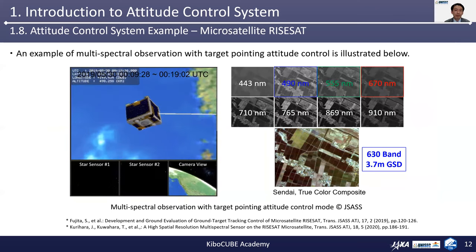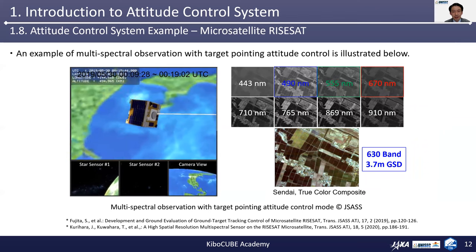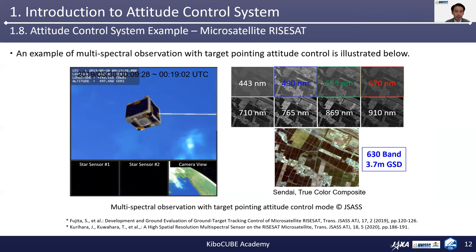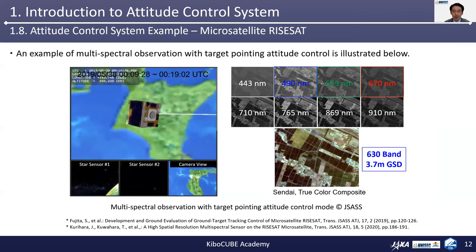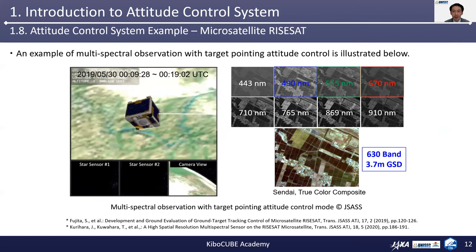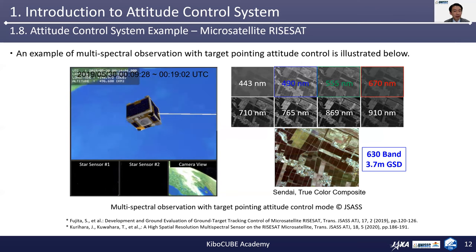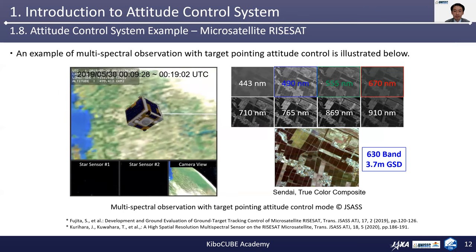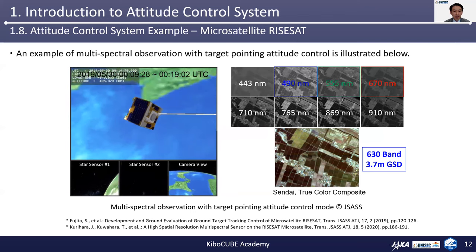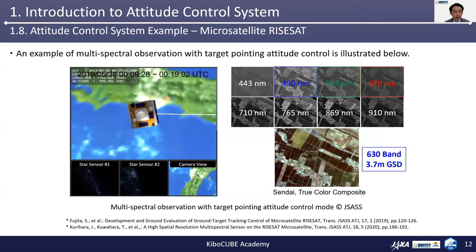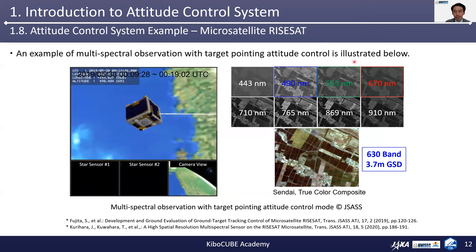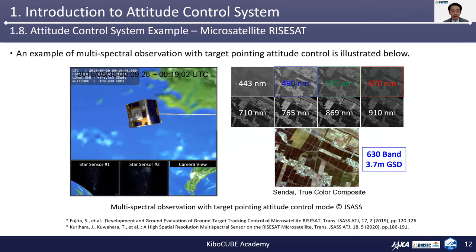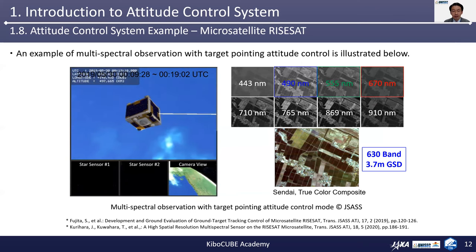As an example of a satellite attitude control method, this figure illustrates a multi-spectral observation with target-pointing attitude control, which was demonstrated by the microsatellite LISAT developed by Tohoku University. This video shows the satellite attitude conducting target-pointing observation while it flies over observation targets around Sendai City, Japan, in order to achieve a long exposure time for target observation with different wavelengths. This allows the combination of some wavelengths to generate meaningful scientific data after the observation.